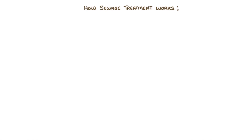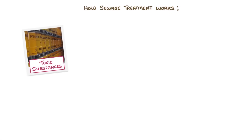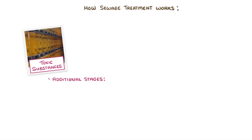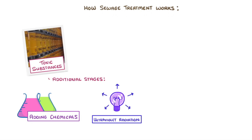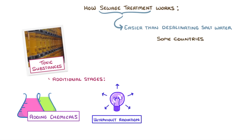In some cases wastewater can contain toxic substances, and these would have to be removed by additional stages — for example by adding chemicals to precipitate out any metals, or using ultraviolet radiation to break them down. Treating wastewater requires a lot more effort than treating fresh water, however it's still a lot easier than desalinating salt water. This is why some countries with a limited water supply, like Singapore, rely on treating wastewater for their drinking supplies.